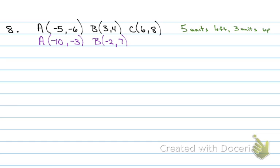For point C, the new x value is one — she subtracted five from six because we're going five units left. This is where a lot of people struggled on the test, so if you missed it the first time, this part will take some extra focus to study.